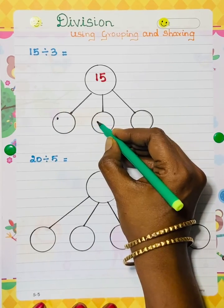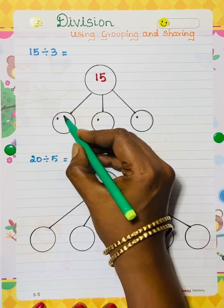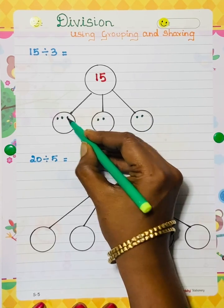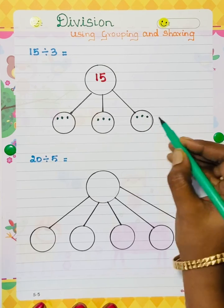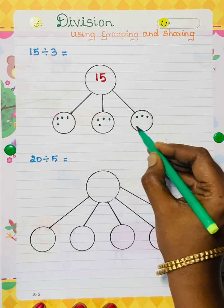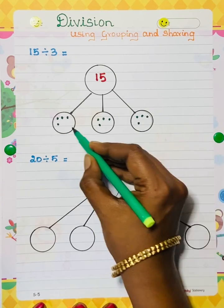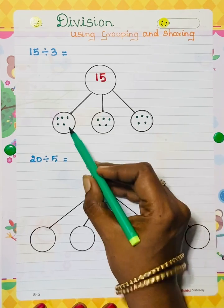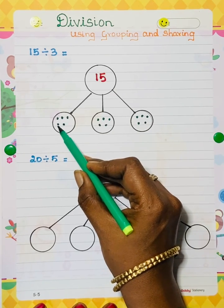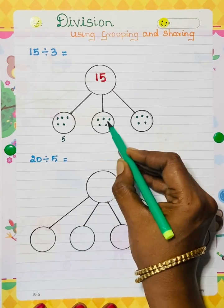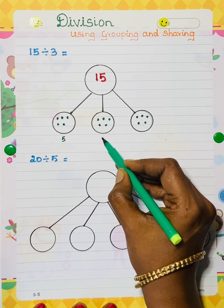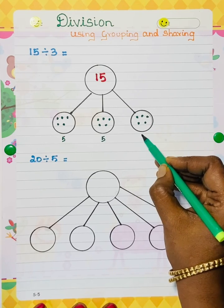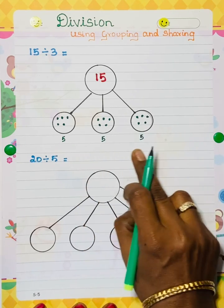Count 1, 2, 3, 4, 5, 6, 7, 8, 9, 10, 11, 12, 13, 14, 15. Now we have to count: 1, 2, 3, 4, 5 — 1, 2, 3, 4, 5 — 1, 2, 3, 4, 5. This is equal grouping and sharing.